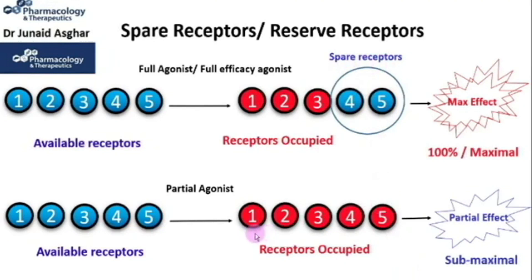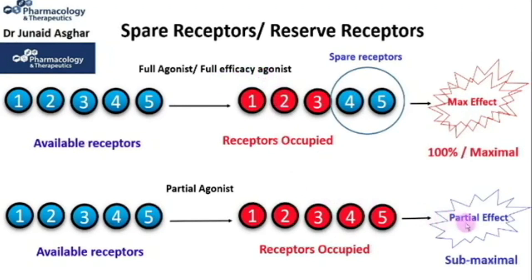Partial agonists are known to occupy all the available receptors, but are unable to produce the same maximal response seen with full agonists. And thus, they fall short of producing the maximal effect — we call this a partial effect or submaximal effect.